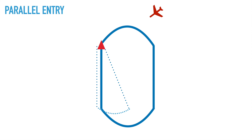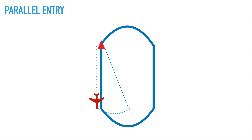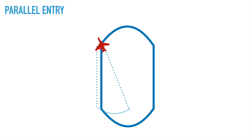The third hold entry pattern is the parallel entry. With this type you're being very careful because you don't want to fly into the unprotected side of the airspace. The left-hand side of the racetrack pattern may be unprotected — perhaps there's an obstacle or restricted airspace. So you hug the inbound track in a parallel way, then turn inbound to stay in the protected airspace on the right-hand side. Just like the offset entry, you approach from the other side of the fix, fly directly to the fix, then fly outbound parallel to the inbound course. Make a left-hand turn and keep that turn going until heading directly back to the fix, then make a right-hand turn and continue the racetrack pattern.